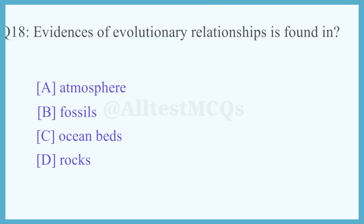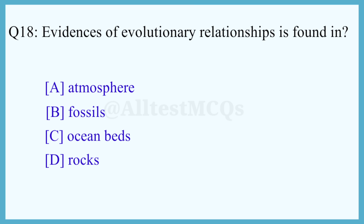Q18. Evidence of evolutionary relationships is found in? The correct answer is option B: Fossils.